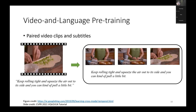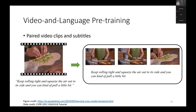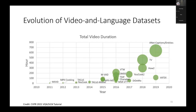Let's look at the evolution of video-language datasets. This figure from our previous tutorial shows some very important downstream datasets — for example, MSVD, ActivityNet Captions, and DiDeMo. All these datasets include different downstream tasks such as video captioning, video question answering, and video-text retrieval.